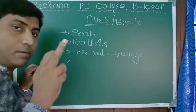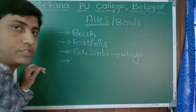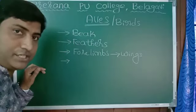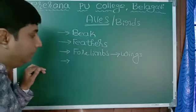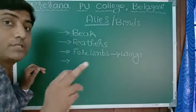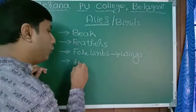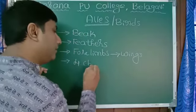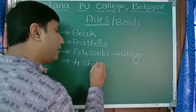Birds have a very well-developed digestive system, circulatory system, reproductive system, and excretory system.